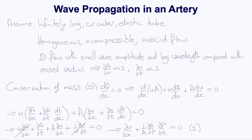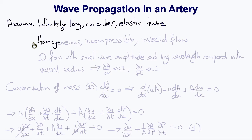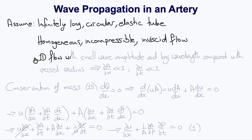Another consequence of vascular elasticity is wave propagation. The pulse wave is an elastic wave that propagates along the vessel wall, and we can derive the wave equation for pulse wave propagation by making a number of simplifying assumptions. We first assume that the vessel is an infinitely long circular elastic tube, the fluid flow is homogeneous, incompressible, and inviscid (ignoring viscosity effects), and that the flow is one-dimensional — we don't consider the flow distribution across the vessel.